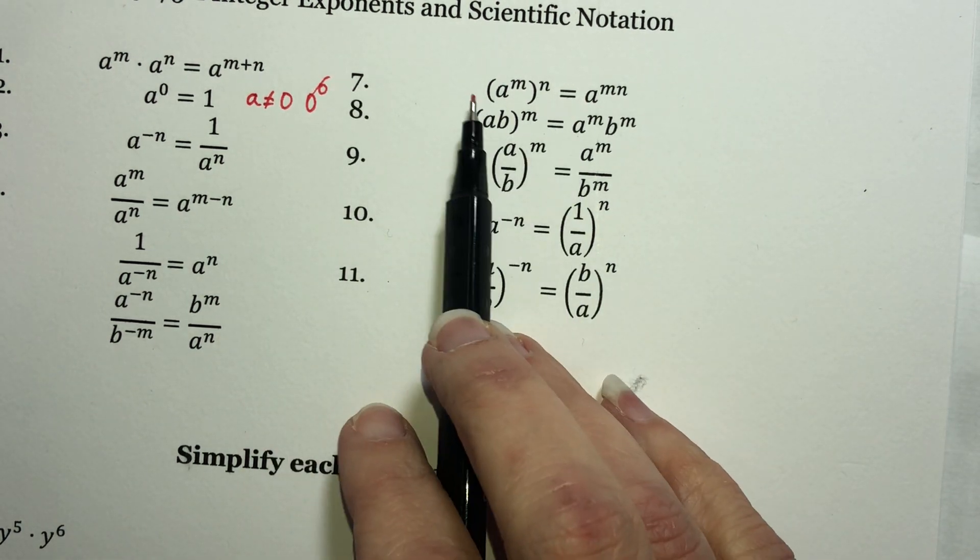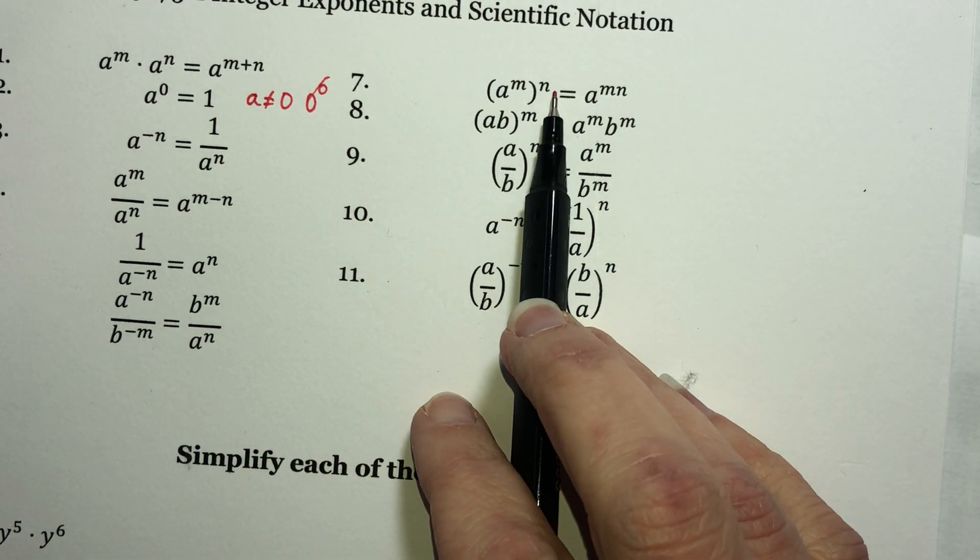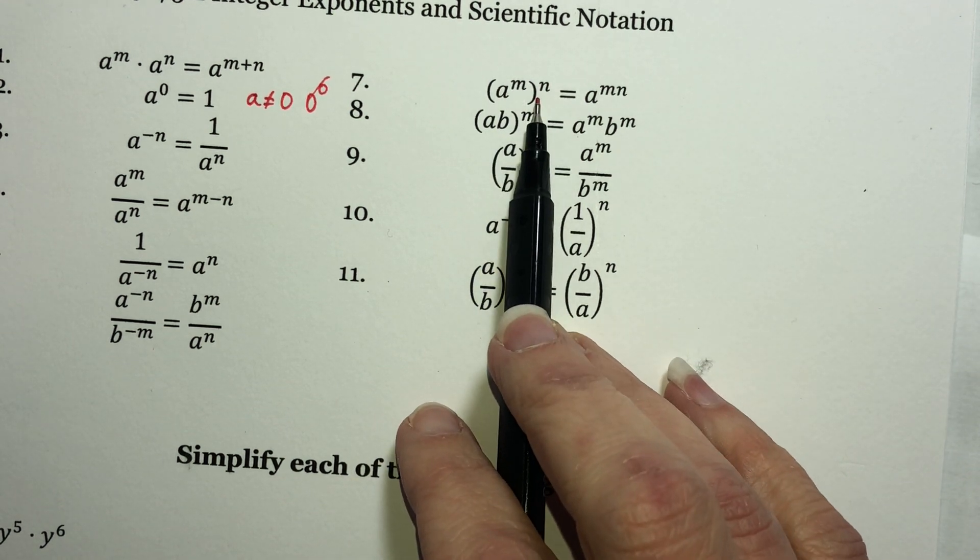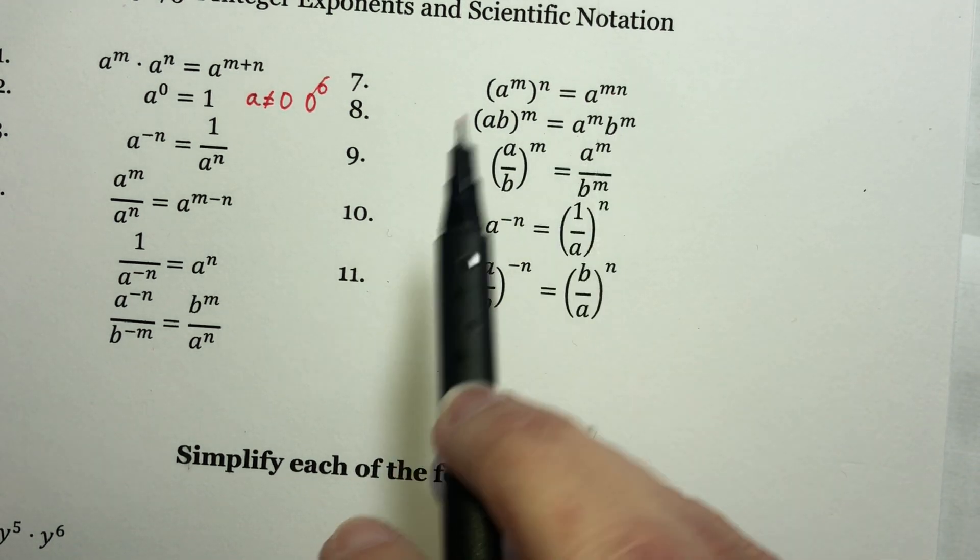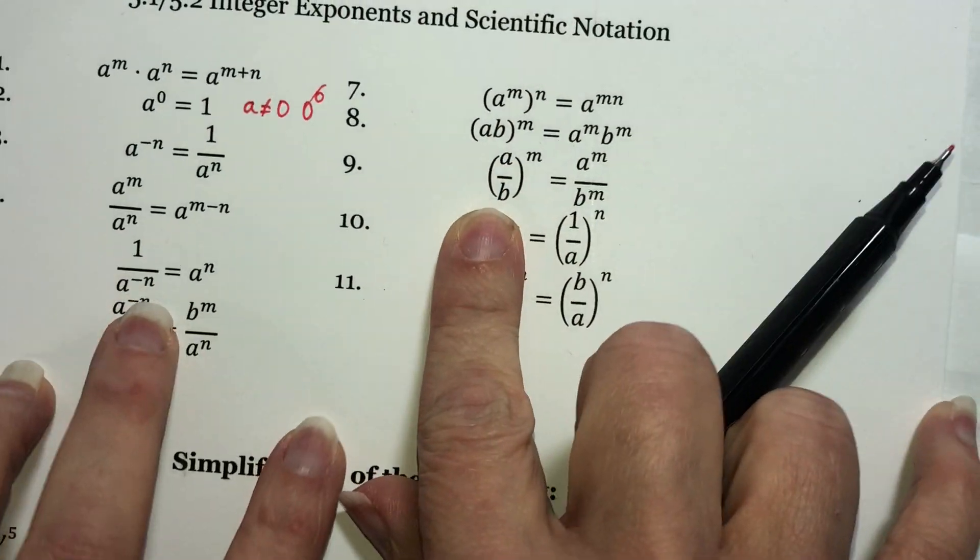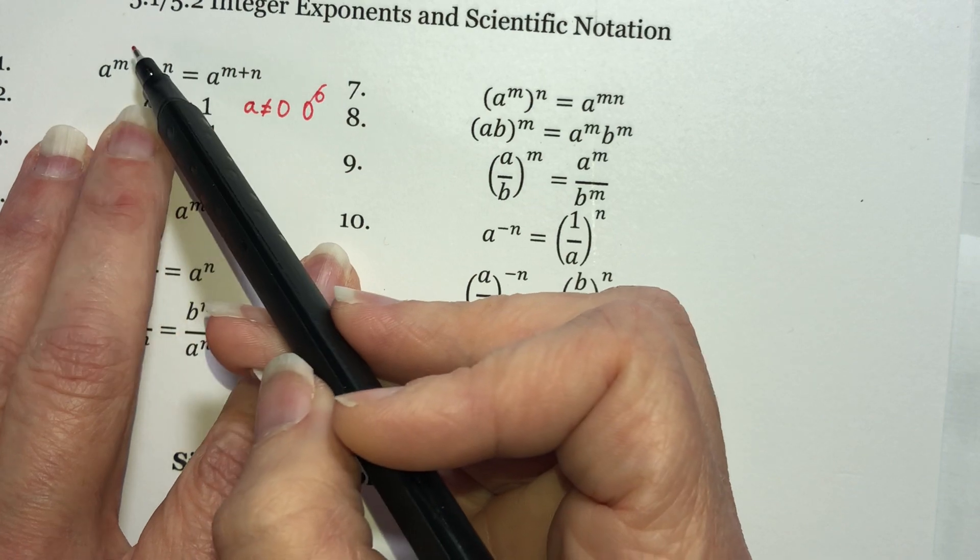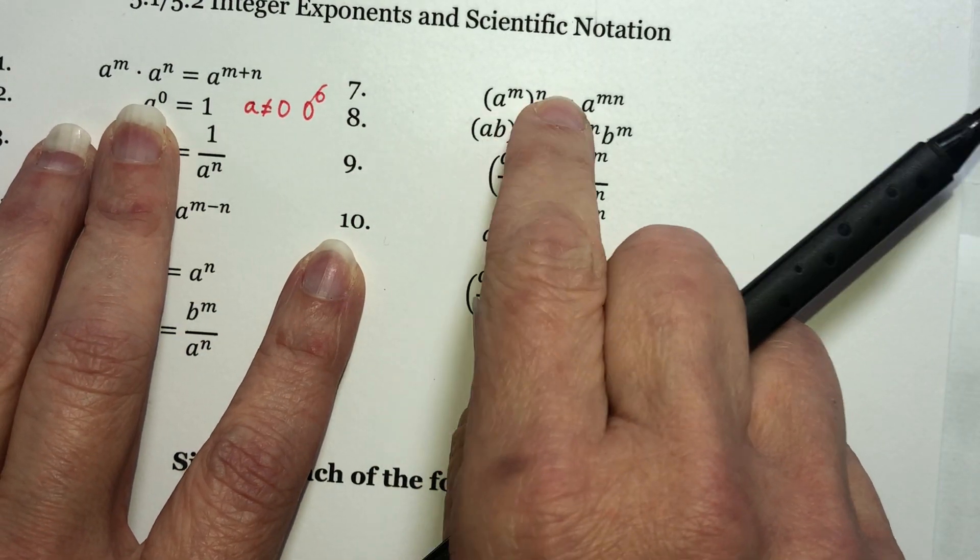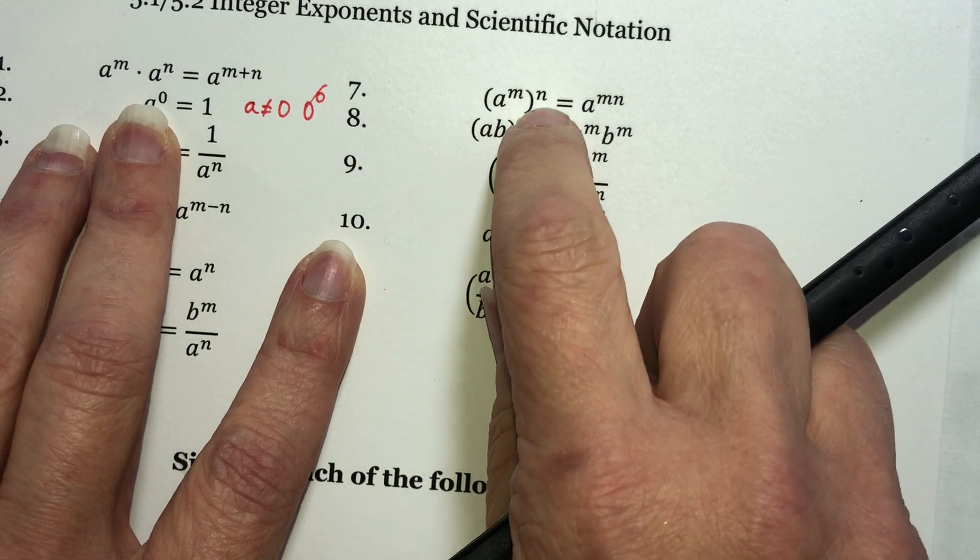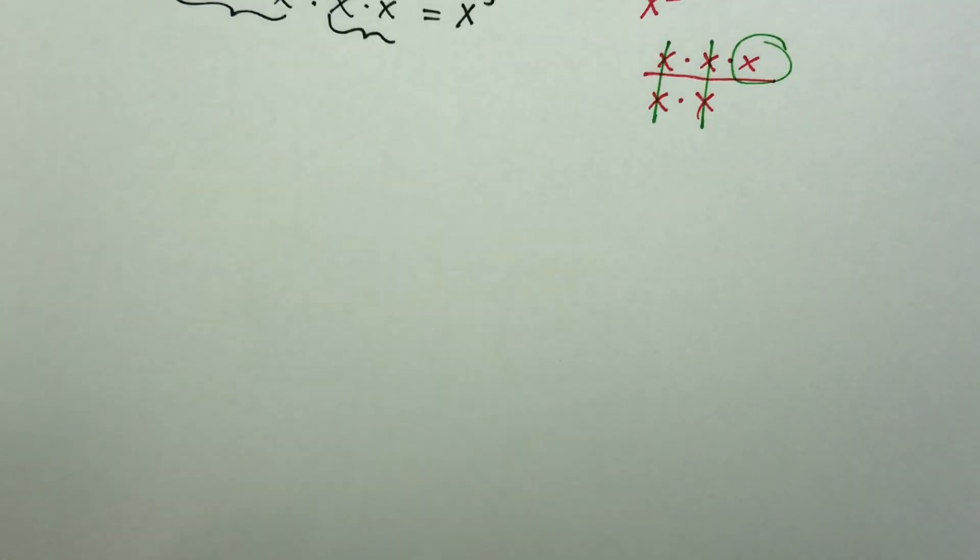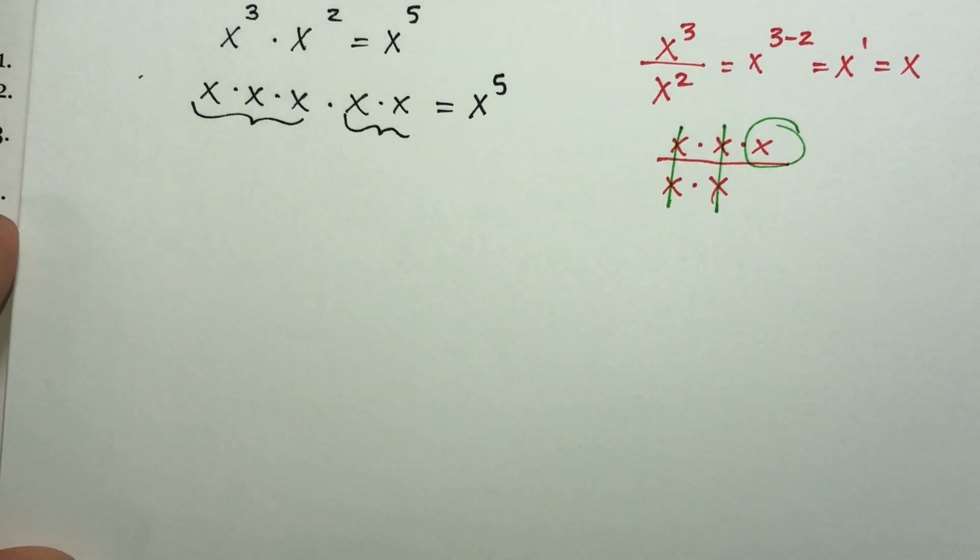Number seven. a to the m to the n. If you have a power raised to a power, you get to multiply those exponents. Make sure you see the difference between these two. This is a to the m times a to the n. This is a to the m raised to the n power. A power raised to a power, you multiply your exponents. Now, let's see why that might be true as compared to this one.